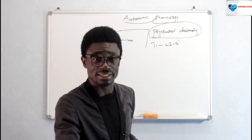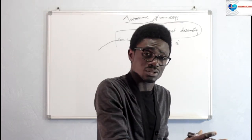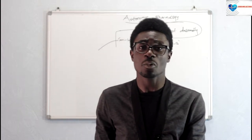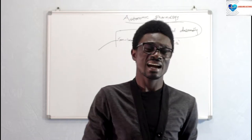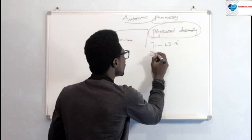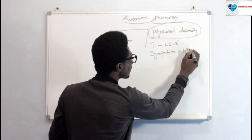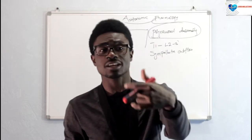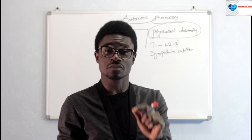This sympathetic outflow — we're talking about the preganglionic sympathetic fibers. These preganglionic sympathetic fibers, or the sympathetic outflow, are actually axons of neurons whose cell bodies are found in the lateral horn of the spinal cord. These axons then travel to the sympathetic ganglion.